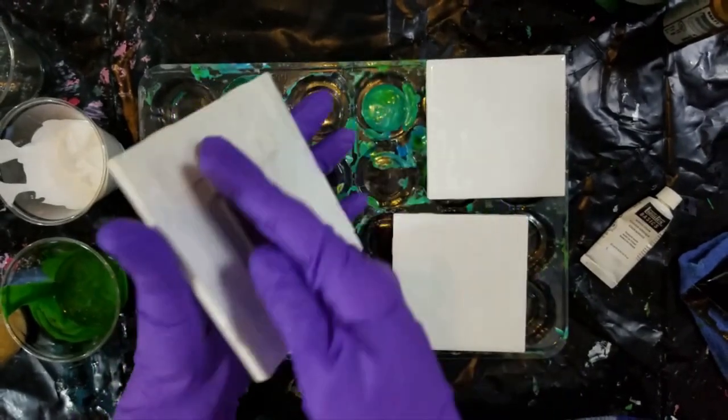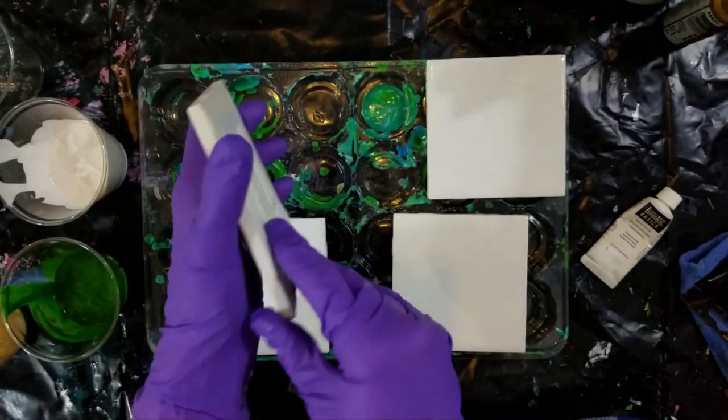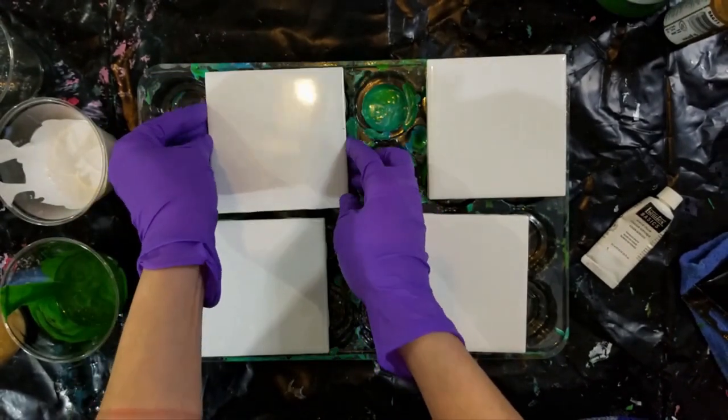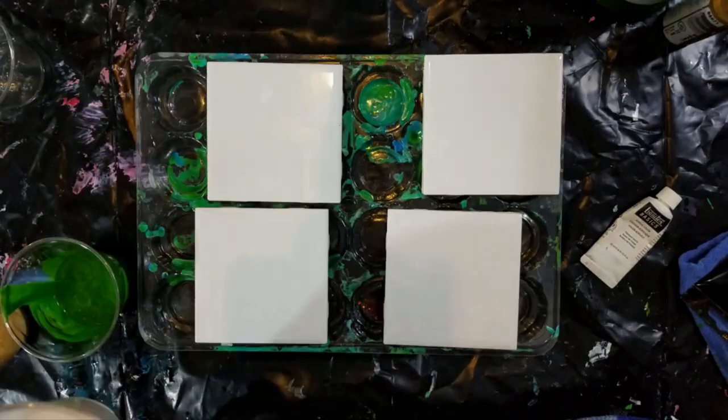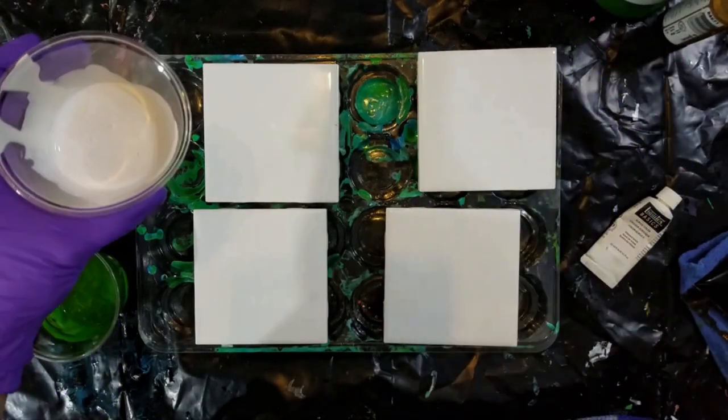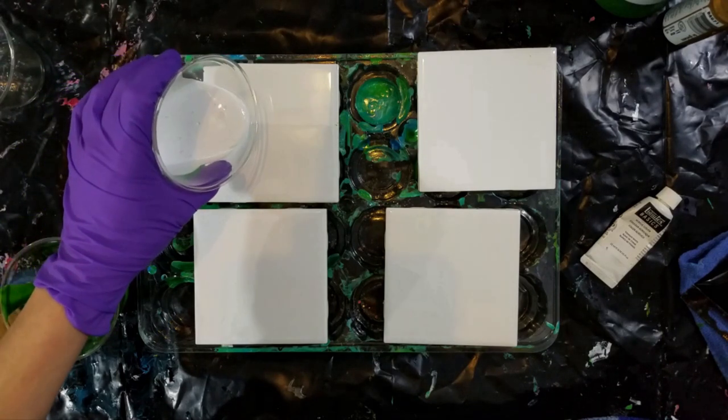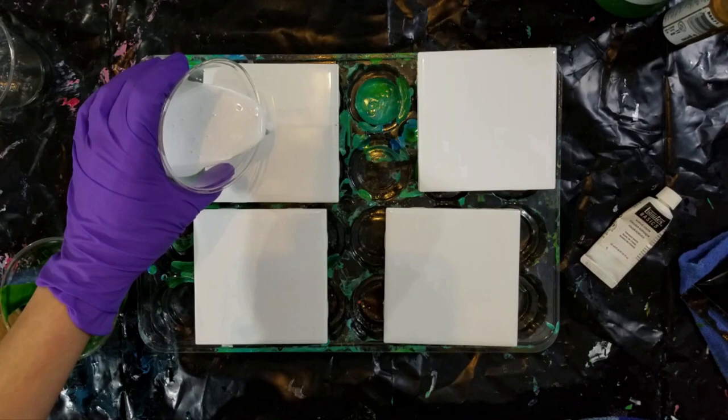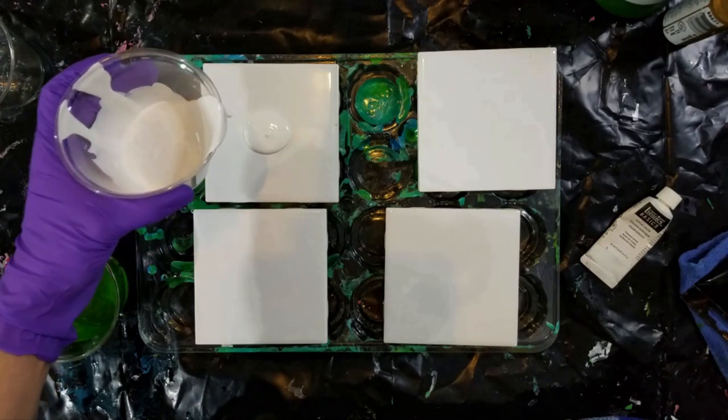I'm using just some ceramic tiles. I taped the bottom off with some artist tape. I didn't tape the whole thing because I'm going to be putting some cork on the bottom. I just taped around the edges so that way they don't get too messy when I am pouring and I will remove that tape later.